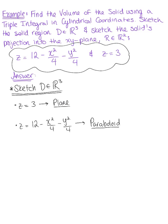To determine the orientation of this paraboloid's concavity — whether it opens upward or downward — we look at the coefficients on x and y. Since the coefficients on x and y are negative, this paraboloid opens downward. You can think of a two-dimensional image of a paraboloid opening downward, concave down, and then extend it to three dimensions.